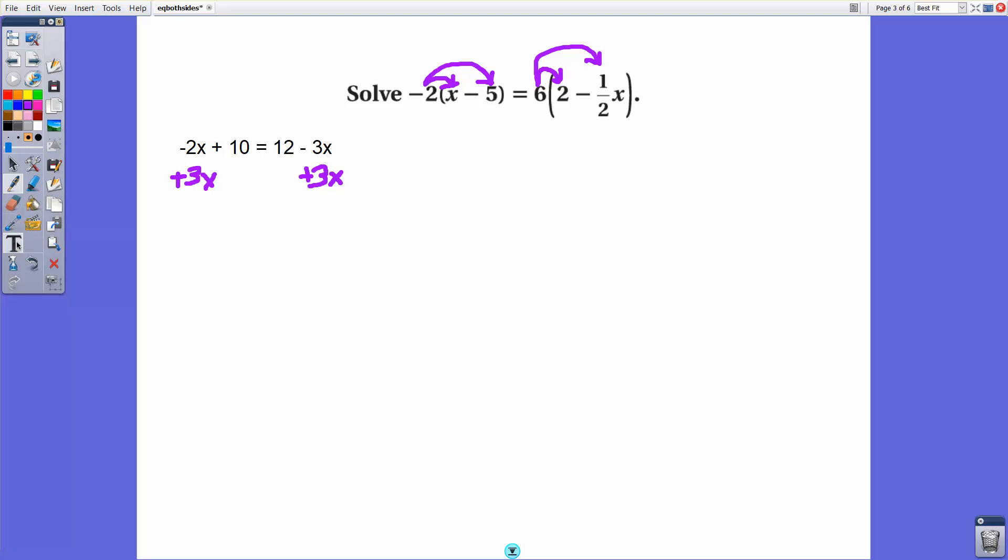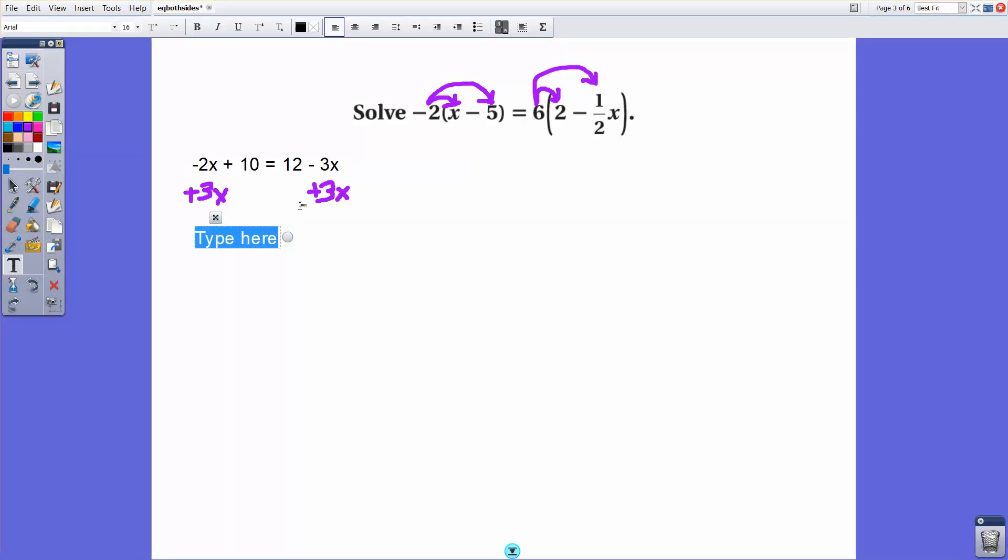So adding 3x to both sides will be our first step. Negative 2x plus 3x is regular x, 1x, plus 10 equals 12. And then of course, this 3x goes away. Now, x plus 10 equals 12. That's a simple equation to solve. We would just subtract 10 on both sides.